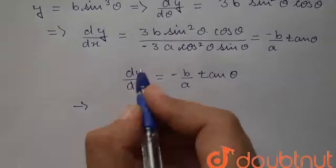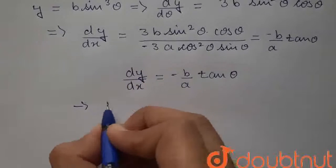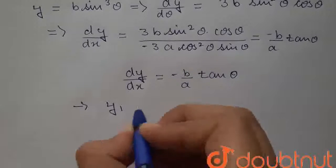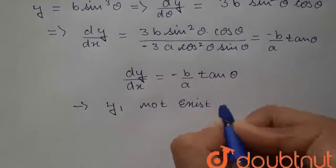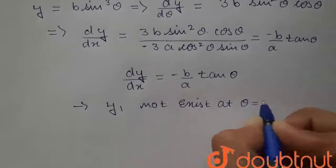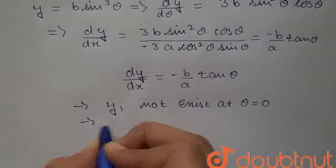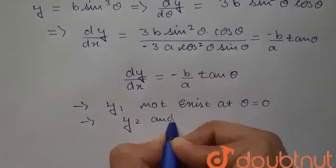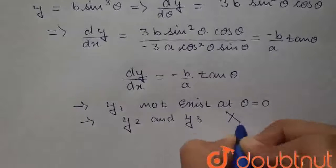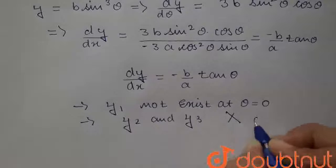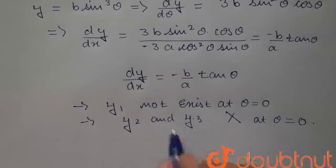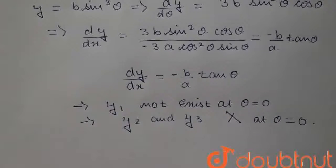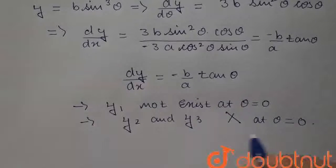So no value exists here. This means that dy by dx, which we write as y1, will not exist at theta equal to 0. If y1 is not existing, then y2 and y3 will also not exist at theta equal to 0. So we were asked to find the value for y3, that is d cube y upon dx cube at theta equal to 0 — no such value will exist. This is the required answer.